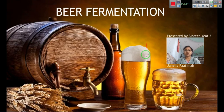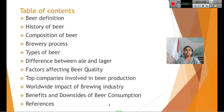In beer fermentation we are looking at different contents: the definition of beer, history of beer, composition of beer, then the brewery process, different types of beers, and the difference between ale and lager. Then factors affecting beer quality, top companies involved in beer production, worldwide impact of the brewing industry, health benefits and harmful effects of beer consumption, and lastly the references.